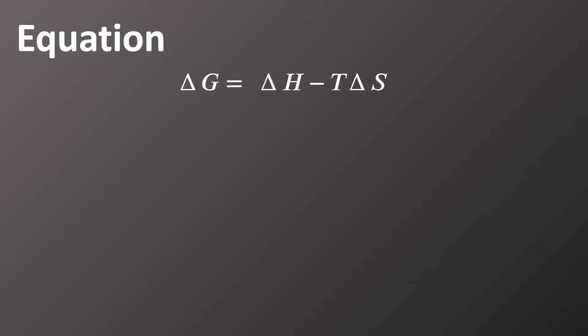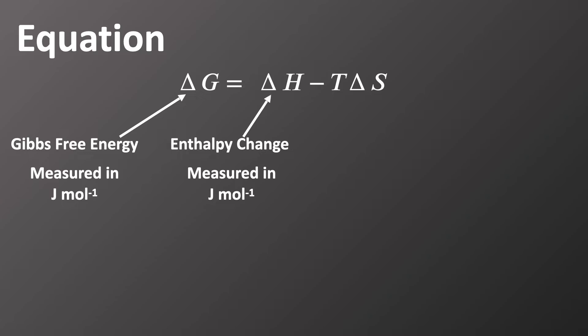Like most of these things, we calculate Gibbs free energy or the change in Gibbs free energy with an equation. The equation is delta G equals delta H minus T delta S. Delta G represents Gibbs free energy and we measure that in joules per mole. Delta H is enthalpy change, which we've already looked at. In this case, we also measure this in joules per mole.